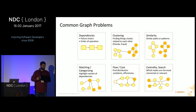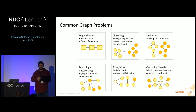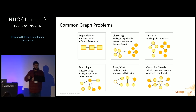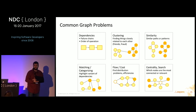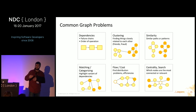Friends of friends — like LinkedIn's 'people you might know' or Facebook's friend suggestions — is a clustering sort of problem. Fraud detection is another very common use case: clustering algorithms are used to determine whether a group of transactions is similar to known fraudulent transaction clusters.